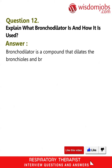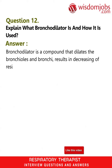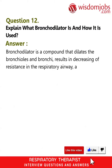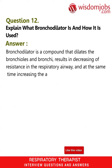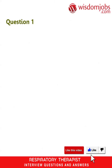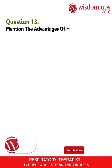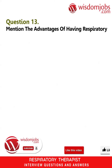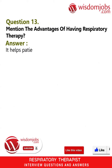Question 12: Explain what a bronchodilator is and how it is used. Answer: A bronchodilator is a compound that dilates the bronchioles and bronchi, resulting in decreasing of resistance in the respiratory airway and at the same time increasing the airflow to the lungs.